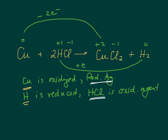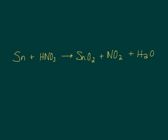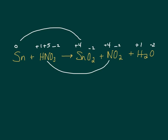Let's try another example. We'll go ahead and assign oxidation numbers. Tin is zero. In HNO3, hydrogen is plus one, oxygen is minus two, so nitrogen is plus five. In the products, we have minus two and plus four, minus two and plus four, and minus two and plus one. So we can see that tin is changing and nitrogen is changing, and the other things aren't.